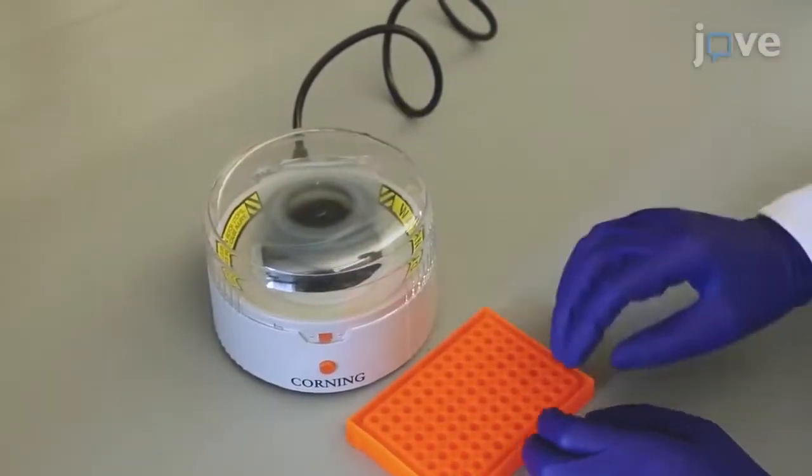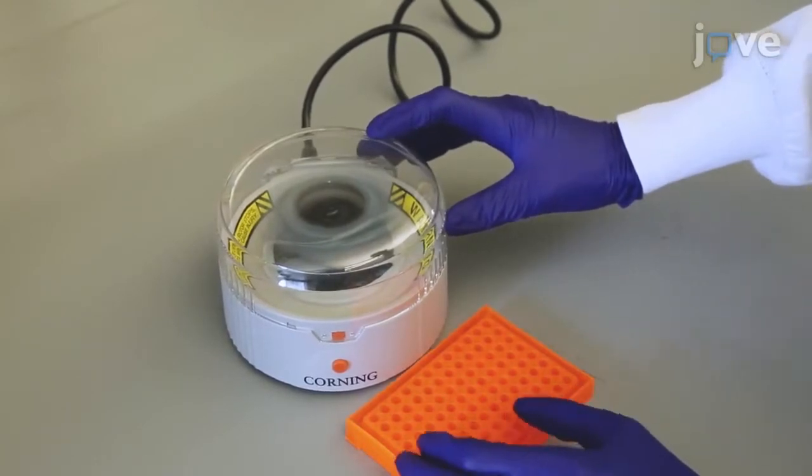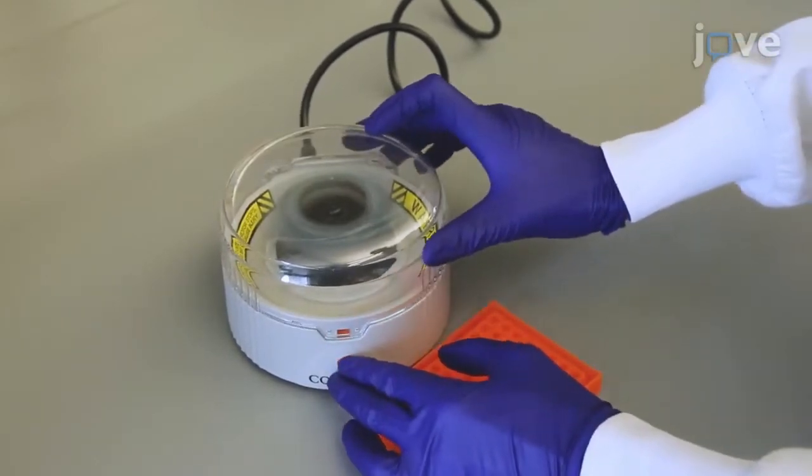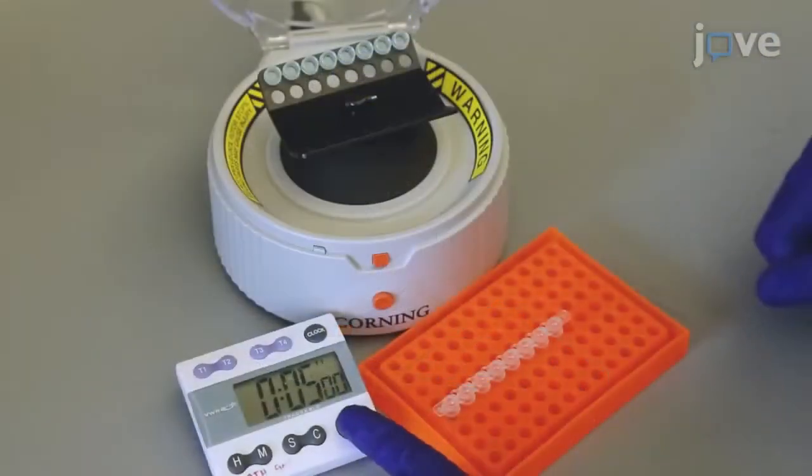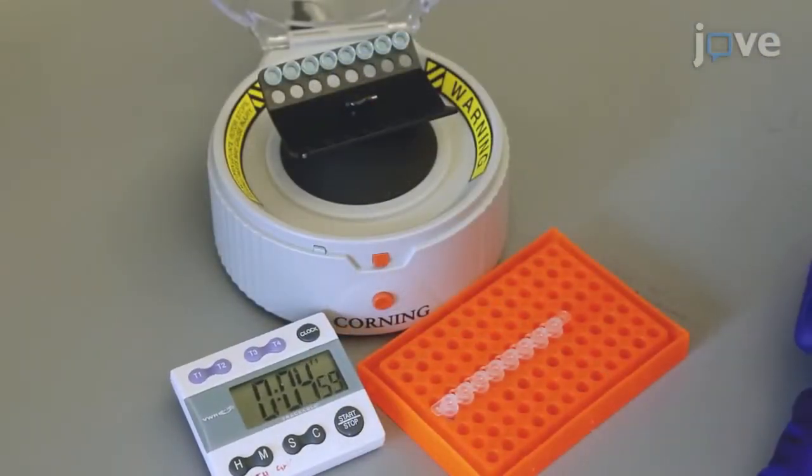Next, spin down the guide RNA oligonucleotide mixtures at 100 times G for 15 seconds. Incubate the reaction at room temperature for 5 minutes before setting up the ligation.